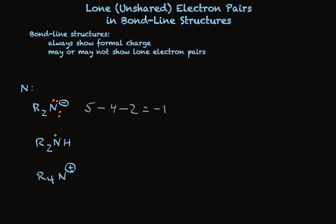So in this structure, nitrogen has one, two, three sigma bonds. That's six electrons already. It needs two more as an unshared pair.